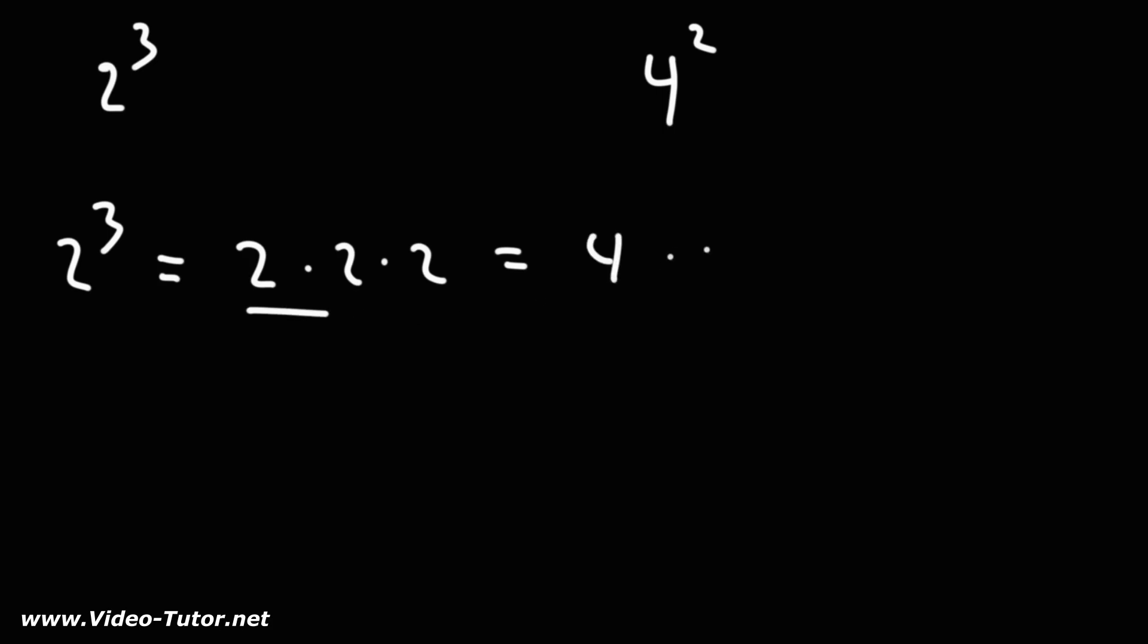2 times 2 is 4, and 4 times the remaining 2 is 8. So 2 to the 3rd power is 8.